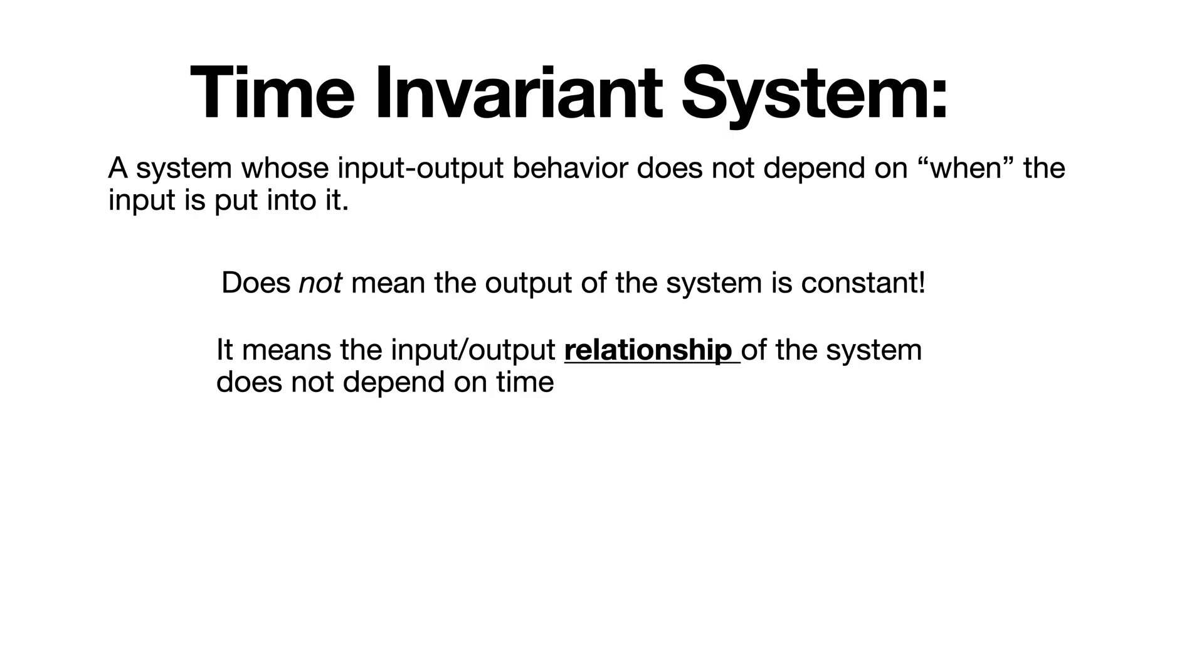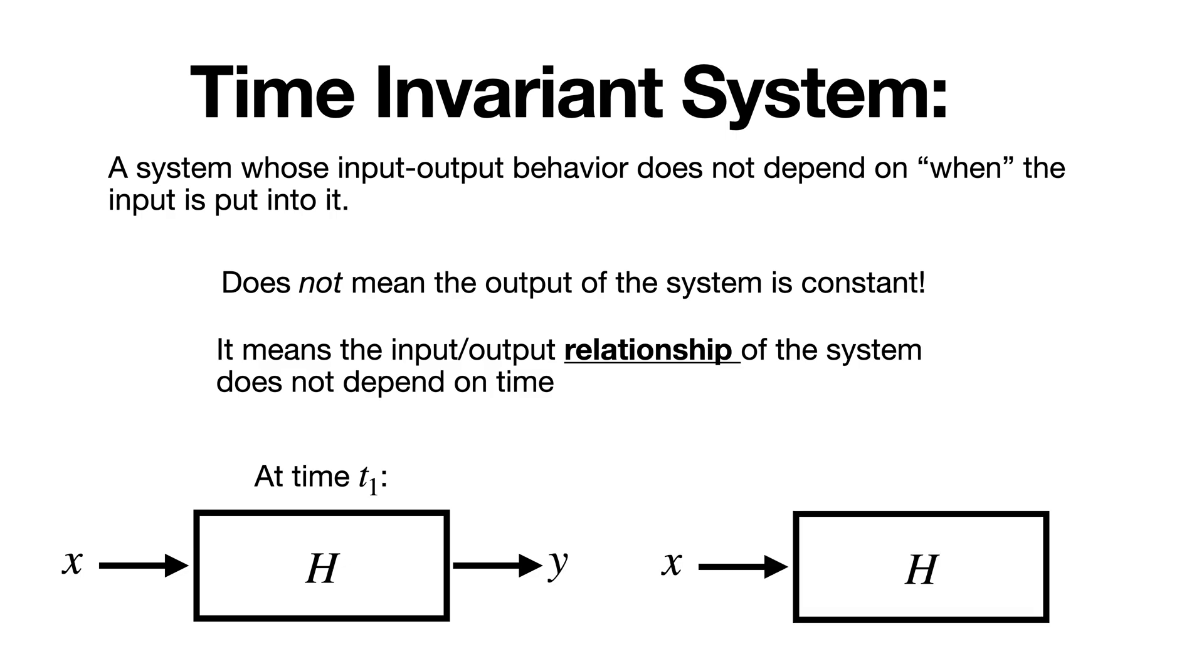Here's an example. Suppose I have a system H and I know that if I put X into my system H at some time T1, I'll get some output Y. If H is time-invariant, I can be confident that if I then put X into my system at a later time, say T2 or an earlier time or whatever, I'll see the same Y. The input-output dynamics don't just change because the time itself is different.